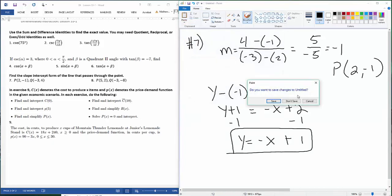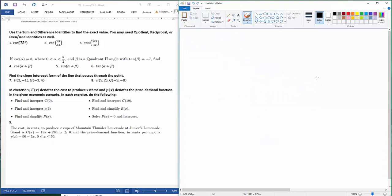Next one. I'm only going to do a few of these. But a few things to remember. Your cost function, which is given to us, that's 18x + 240. And then it gives us our price demand function. So that's a lowercase p. So when it says find and interpret c(0), I'm literally just plugging 0 in for there. So it'll be c(0) equals 18(0) + 240. And that's my costs when I produce nothing, or my startup costs.